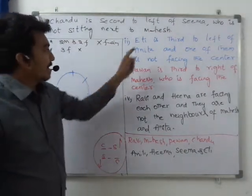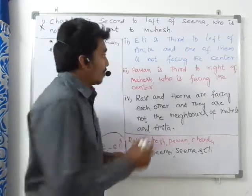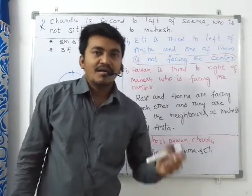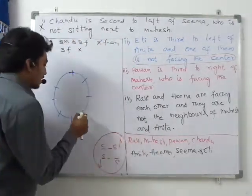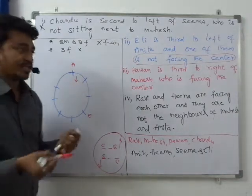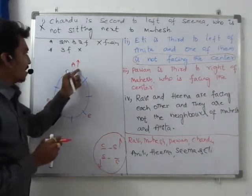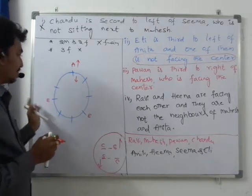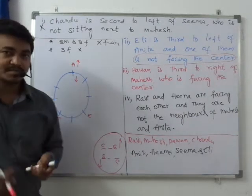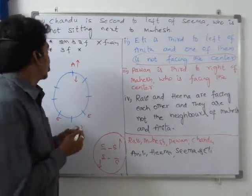Clue two: Iti is third to the left of Anita, and one of them is not facing the center. Again, without knowing the direction either person is facing, we cannot determine the position of Iti relative to Anita. If Anita is facing outside the center, the third left position changes. This clue also does not give valid information at this stage, so we skip it and move to the third clue.